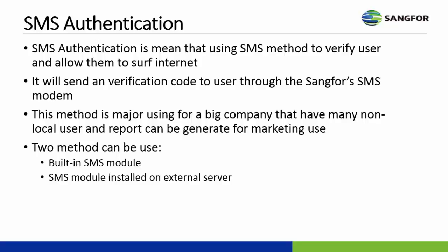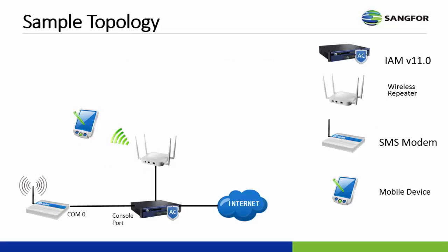This method is mainly used for big companies that have many non-local users, and reports can be generated for marketing use. Two methods can be used in SMS authentication: one is the built-in SMS module, and another is an SMS module installed on an external server, which can be a PC or server. This is the sample topology for SMS authentication — you can see the IM version 11, wireless repeater, SMS modem, and mobile device.